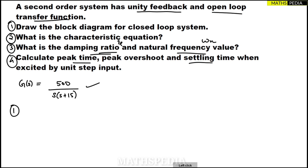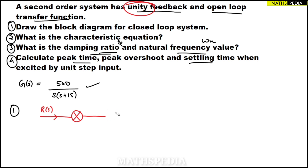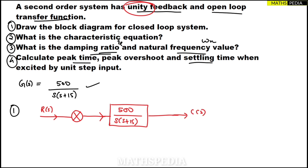For the first question, we draw the block diagram for the closed loop system. The reference input comes in and we have a summing point because we have a feedback closed loop system. They have given unity feedback. One gain block G(s) equal to 500 divided by s(s+15) sits here, going towards the output C(s). From the output we take one feedback — unity feedback means gain will be one.